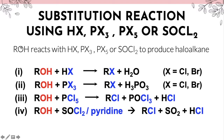Substitution reaction using HX, PX₃, PX₅, or SOCl₂, where X means a halogen atom. Alcohol (ROH) reacts with HX, PX₃, PX₅, or SOCl₂ to produce a haloalkane. The alcohol undergoes substitution and a haloalkane is formed from any of these four reagents.